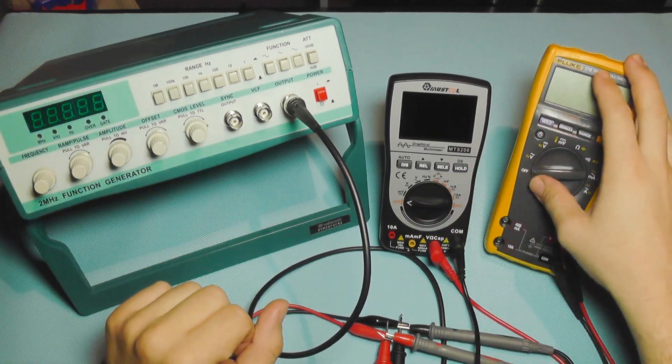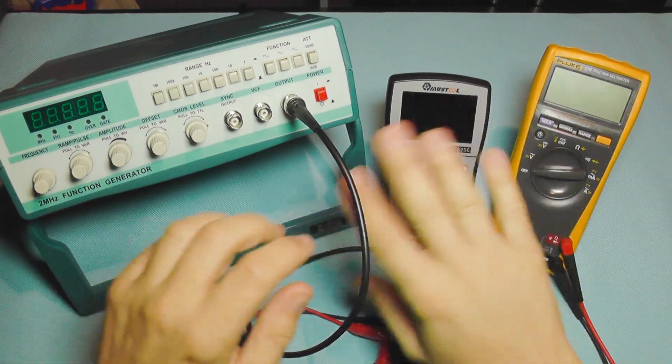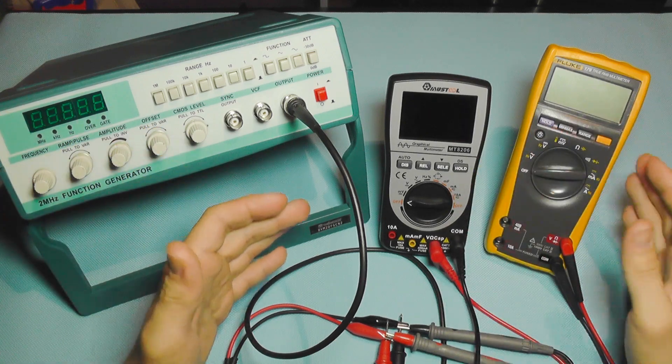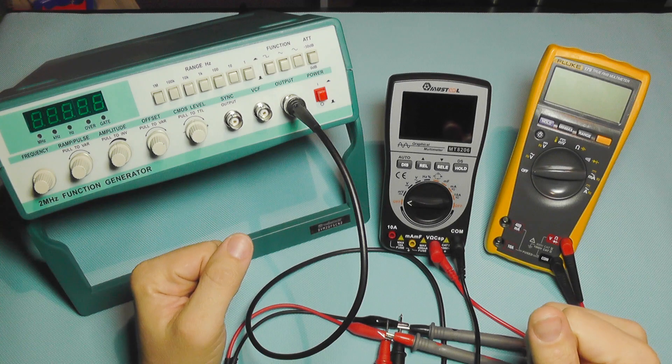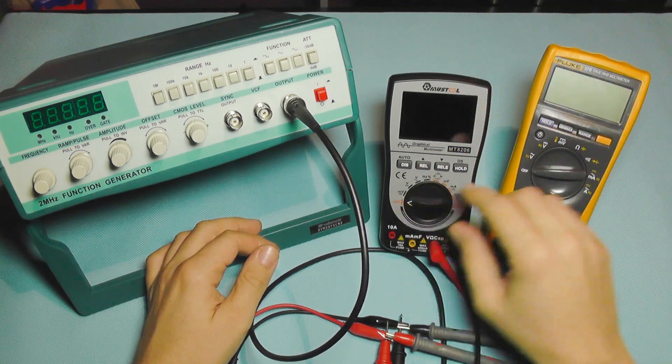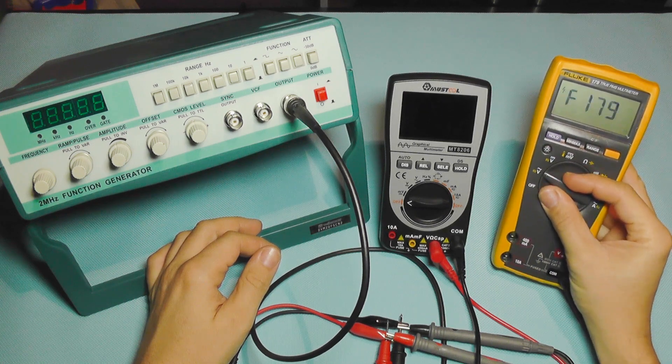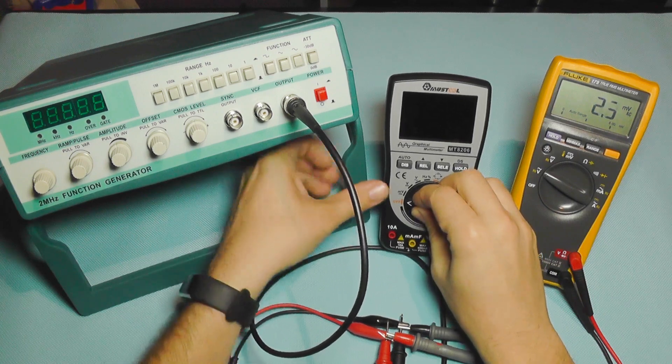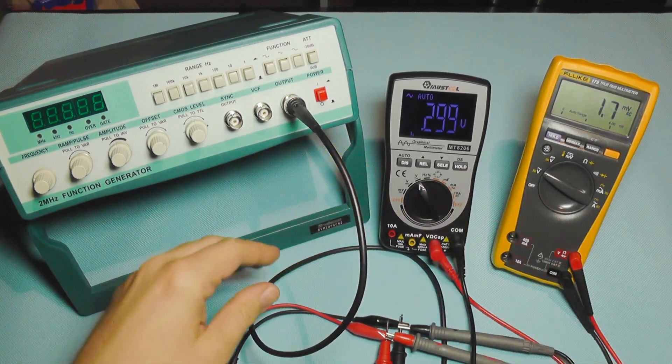I'm going to generate a signal, measure it with the Fluke, and compare it with the Mass Tool to get an idea of how this thing works and if it's accurate. I'm going to turn on the Fluke and use AC voltage. The same will go for the Mass Tool.